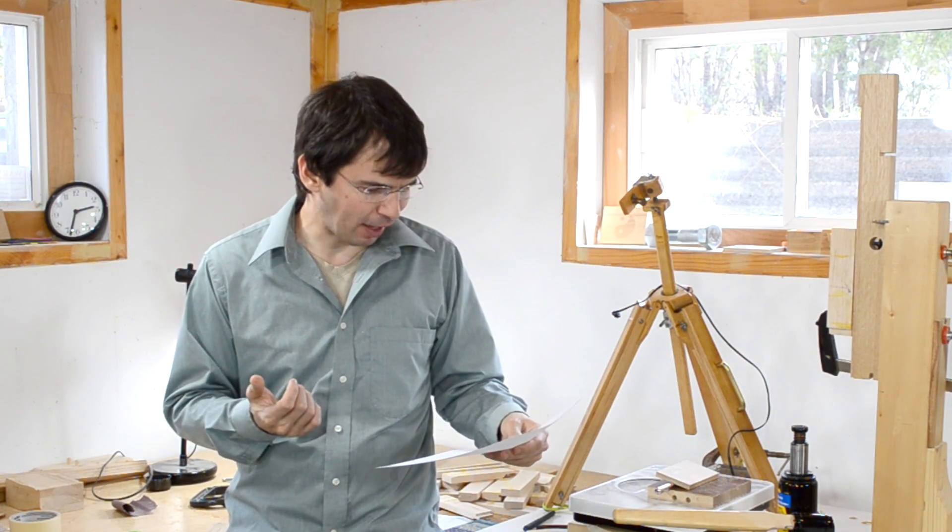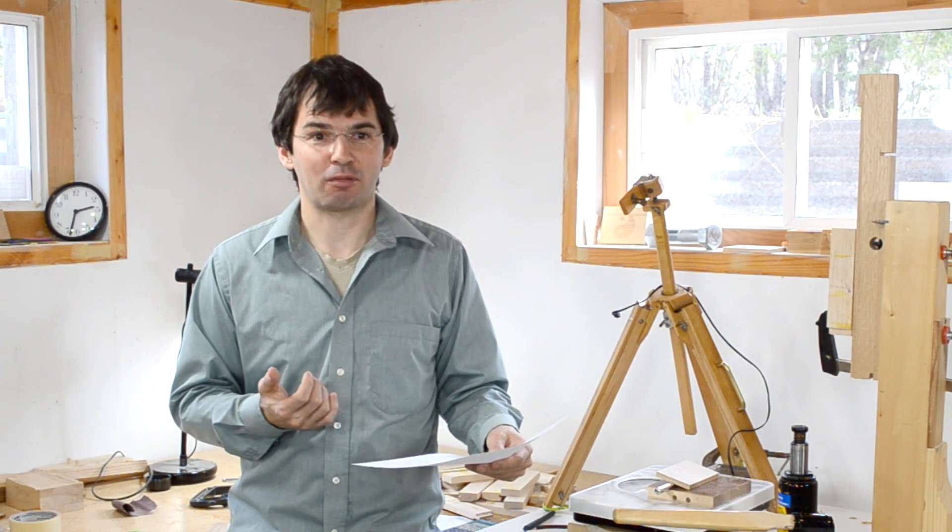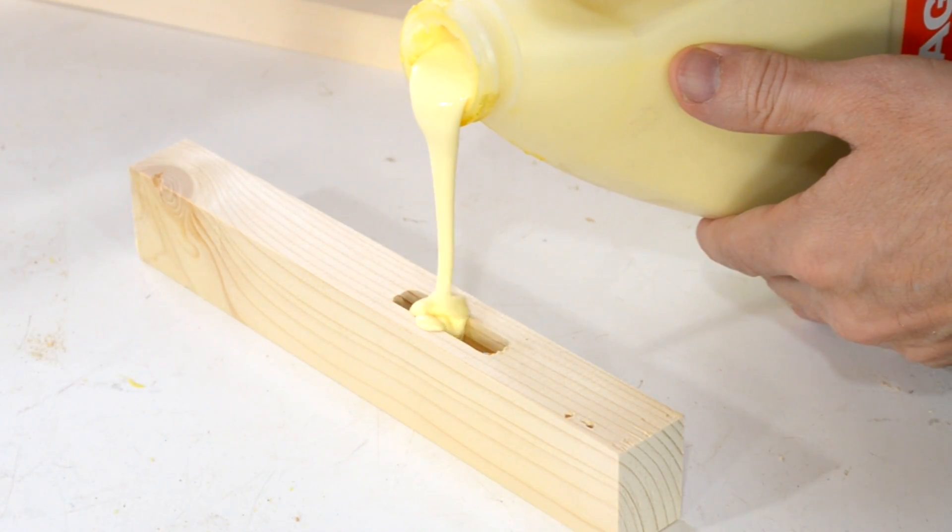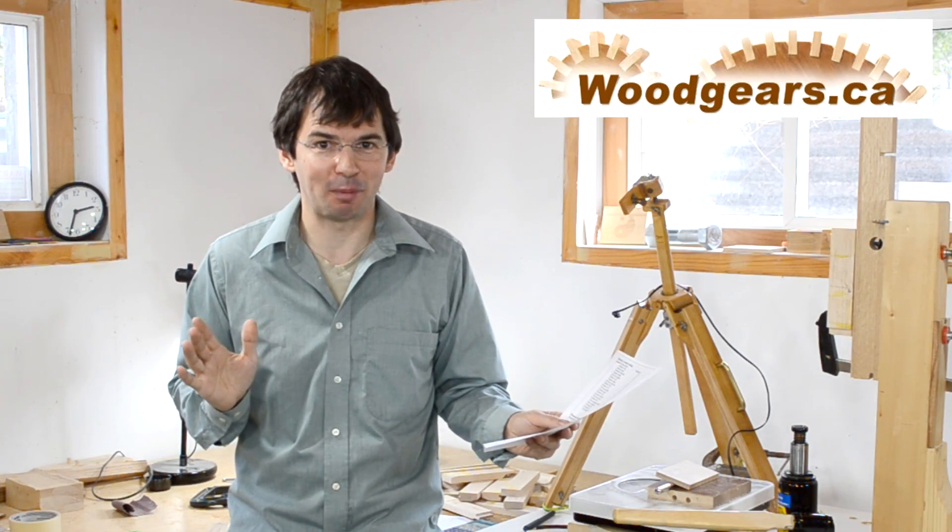And if you combine that with the fact that the dry tenon experiments were the weakest, if you now just make a mortise that's really really loose and just literally fill that with glue and squeeze the tenon into it, that may still be a strong joint. Although it'll still be messy.